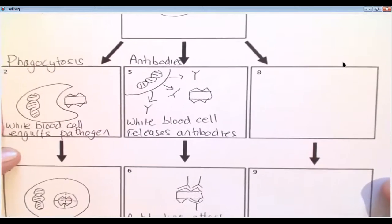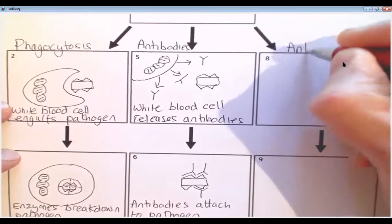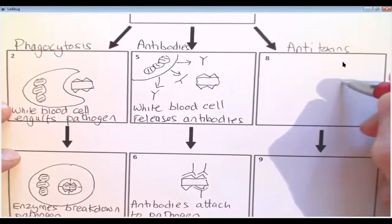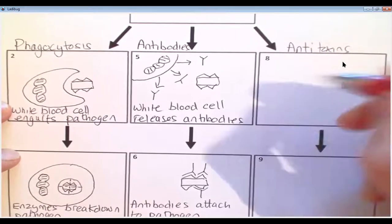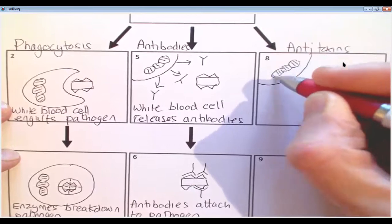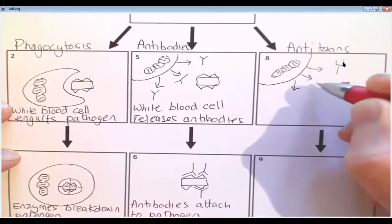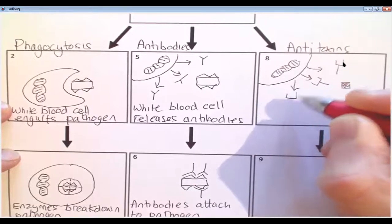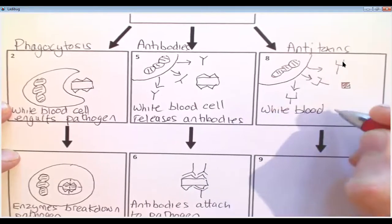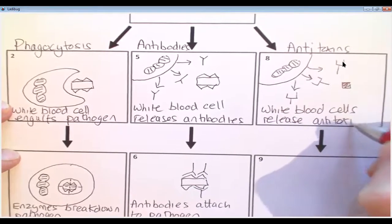The final way is, or the final way that white blood cells will respond to pathogens is by the release of antitoxins. So if you remember rightly, here, like a toxin from a pathogen. And over here again, I'm going to do my white blood cell just in the corner. And then I guess lots of you will know the picture I used for an antitoxin here. So white blood cells release antitoxins.